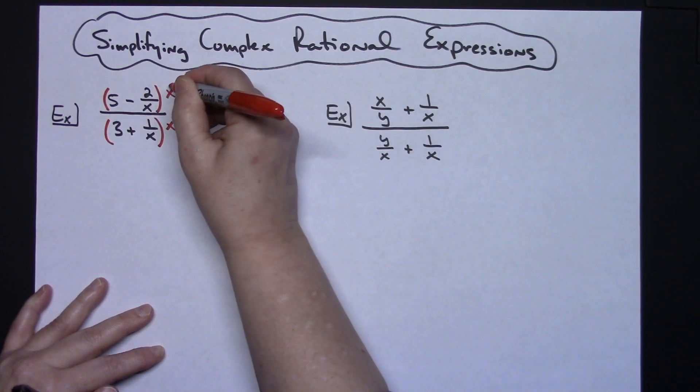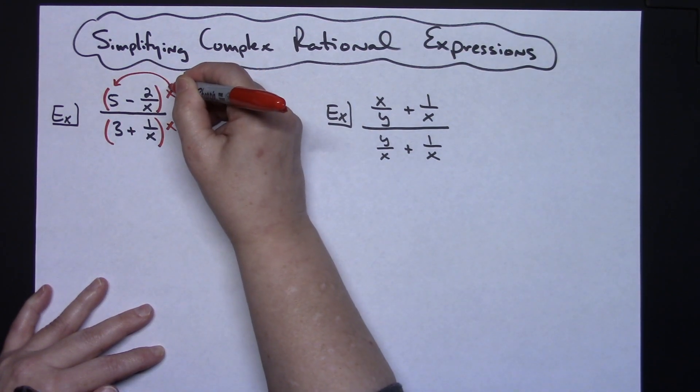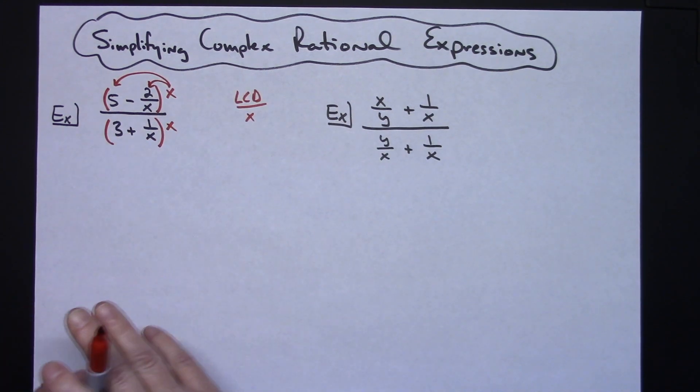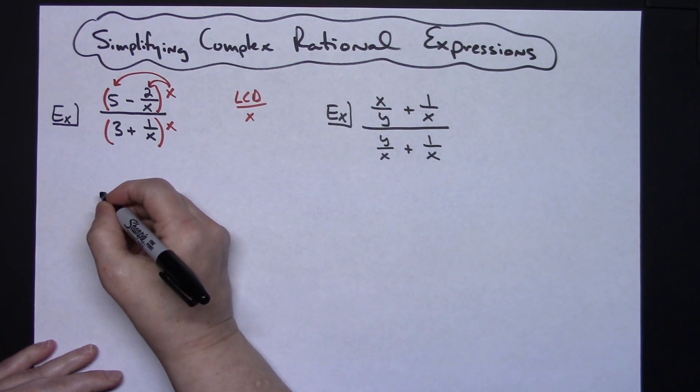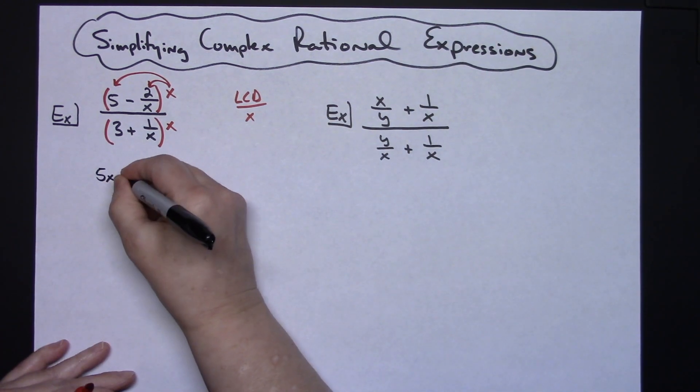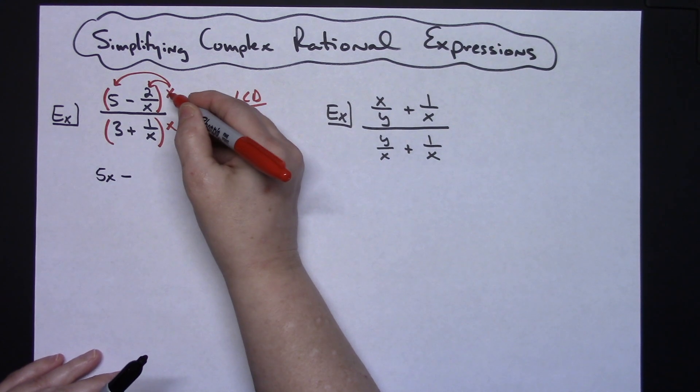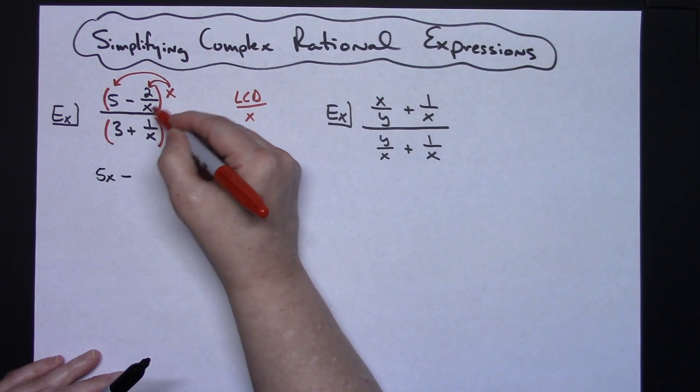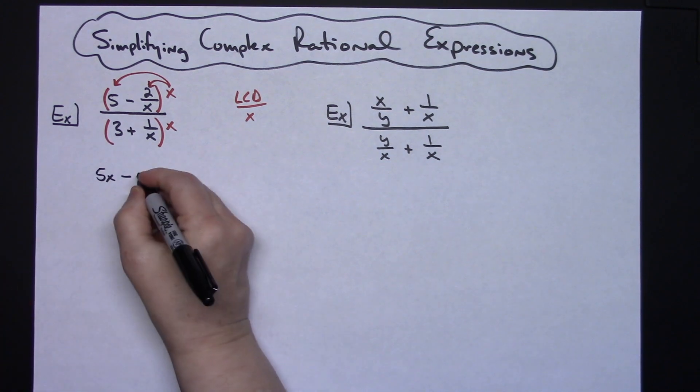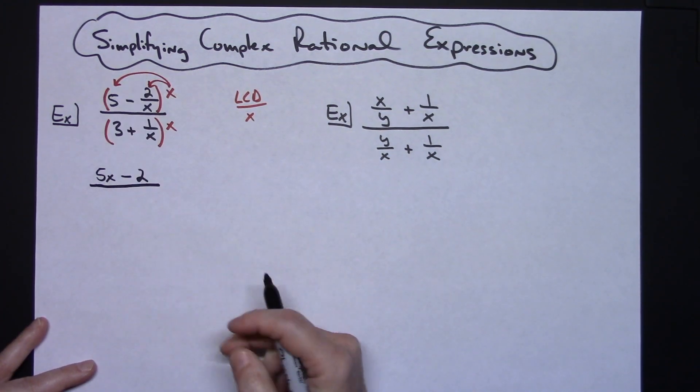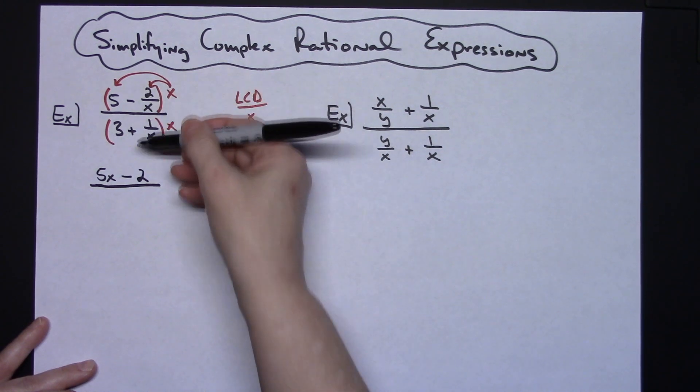Now to do that on the top, I've got to distribute the x to both places in there. An x times a 5 is just going to be a 5x, and then we'll go ahead and put the minus sign down. Now when I multiply the x times 2 over x, these two x's are going to cross out. I'm going to be left with that 2. So you can see that as soon as I multiply through by that x, then this fraction disappears.